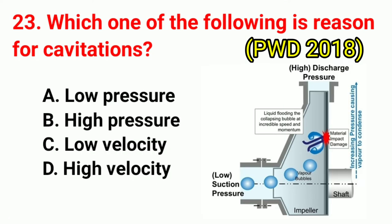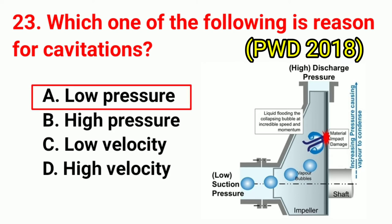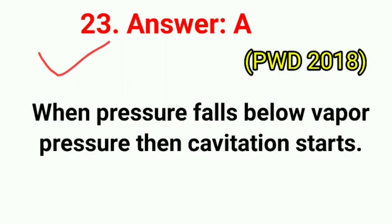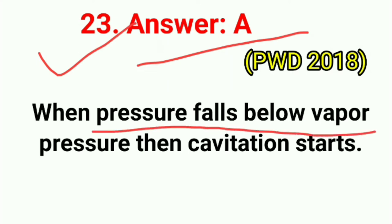Question No. 23. Which one of the following is a reason for cavitation? Correct answer is option A: low pressure. When pressure falls below vapor pressure, then cavitation starts.